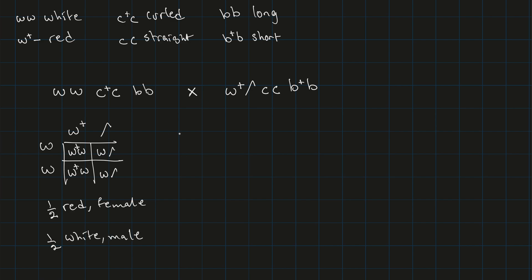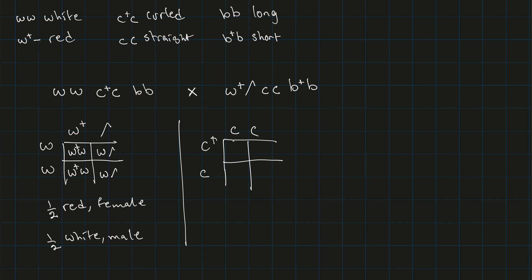For wings, we have a cross between a heterozygous female (C⁺C) and a homozygous recessive male. This works like a typical autosomal gene, independent of sex. We get two heterozygous offspring and two homozygous recessive offspring — so one half will have curled wings, and the other half will have straight wings.